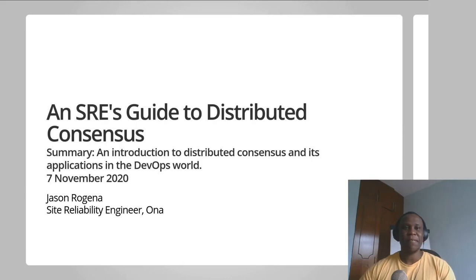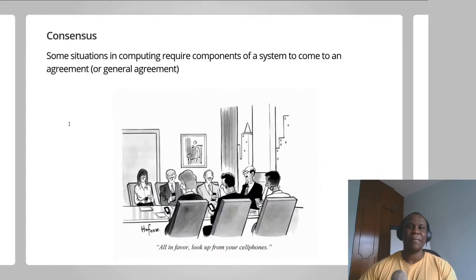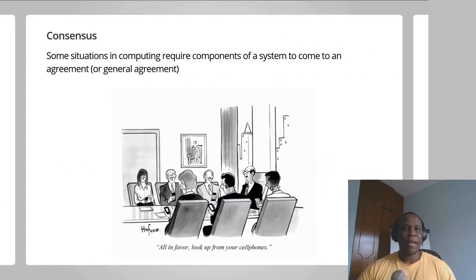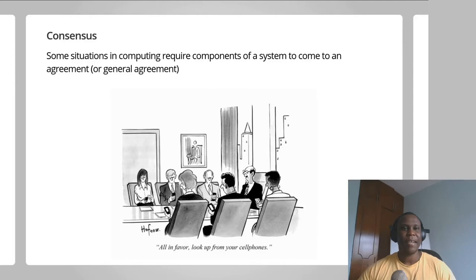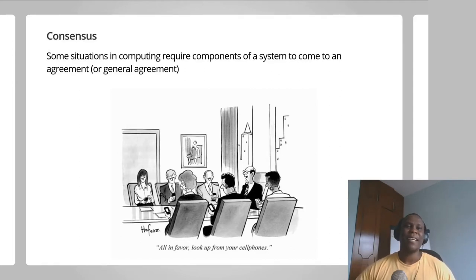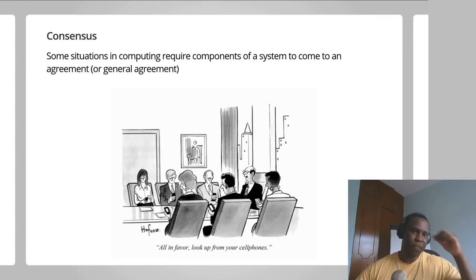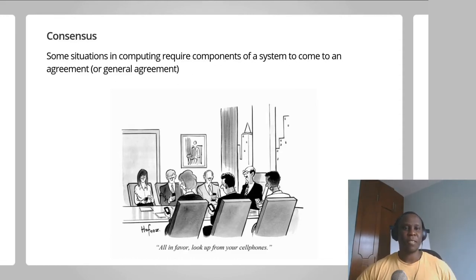I'll begin by defining what consensus means. Consensus is when a group of individuals come to a general agreement. A general agreement implies that not all individuals in the group need to agree with the decision, as long as most of the individuals have agreed.